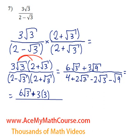Down below over here we have 2 root 3 minus 2 root 3. Those are just going to cancel out, right? Because 2 root 3 minus 2 root 3 is 0. And we have 4 minus the square root of 9, which is 3. Fantastic. So we end up with 6 root 3, plus 3 times 3, which is 9, all over 4 minus 3, which is 1.